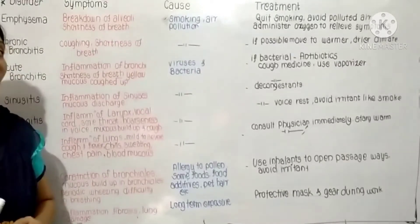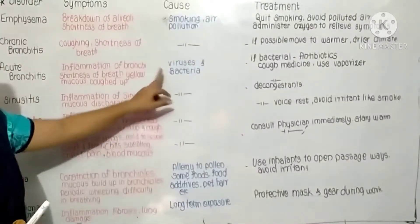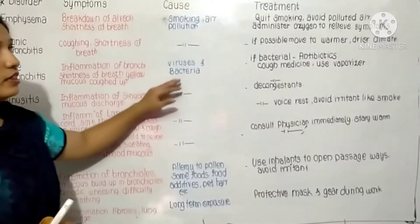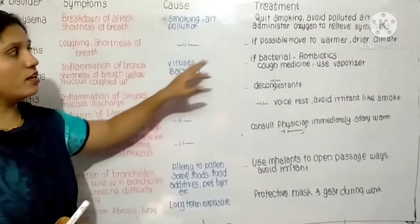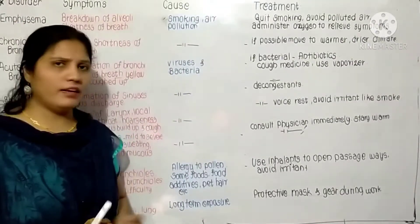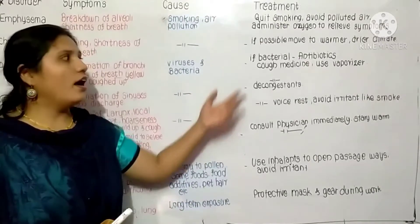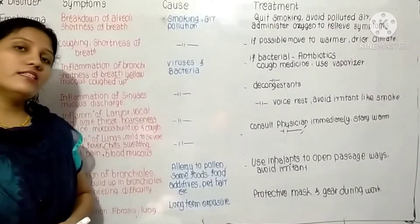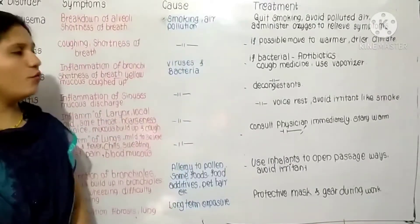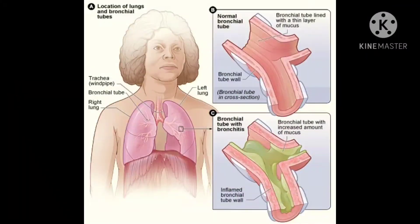If it is a bacterial infection, the person has to take antibiotics and rest. A cough medicine is also recommended, along with use of a vaporizer. In the diagram, you can see a normal bronchial tube compared to a bronchial tube with bronchitis — the inflamed bronchial tube wall has a large amount of mucus present inside it.